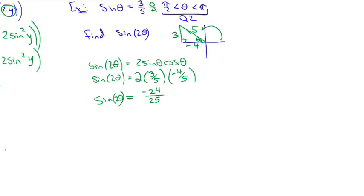Notice it's still within the bounds of negative 1 to positive 1. Sine of anything has to be between negative 1 and positive 1. If you ever get something like 25/24 you did something wrong. If your answer is outside those bounds, you did it wrong.